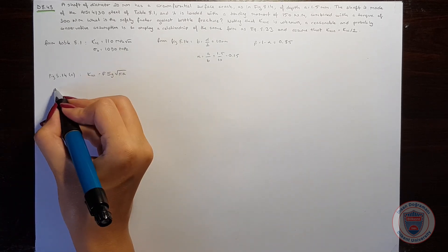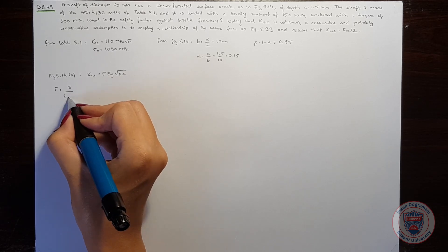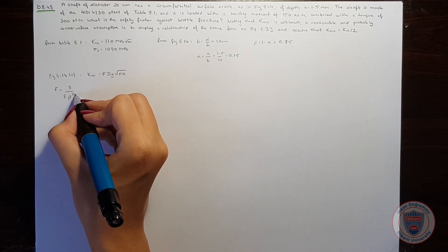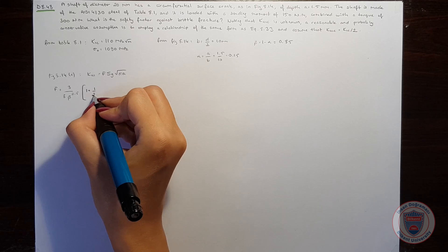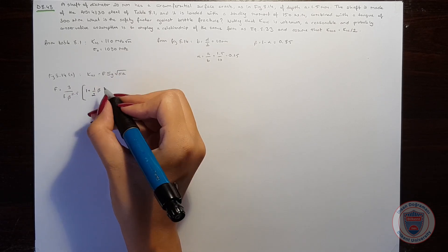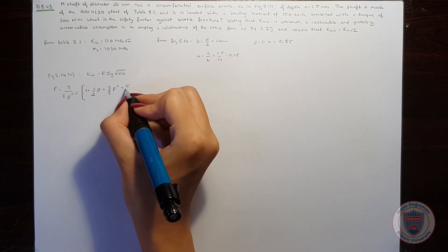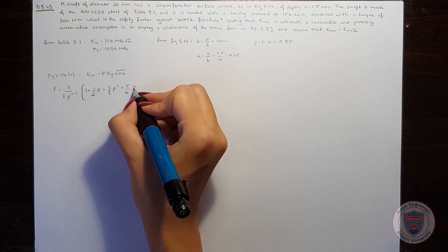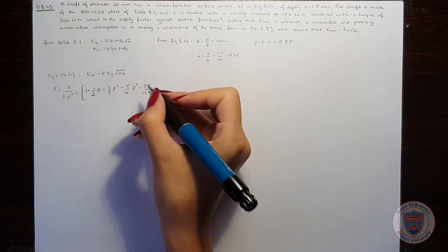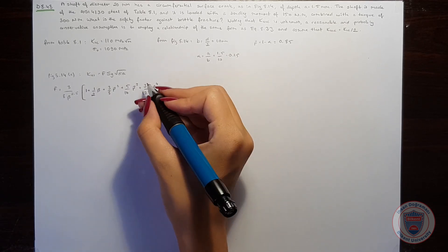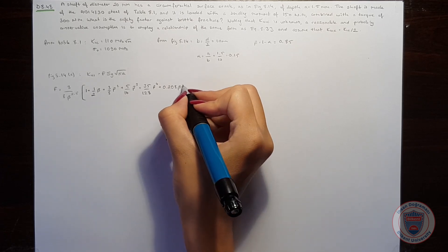For this equation, the form factor equals 3/8 times beta to the power 2.5, times the quantity (1 plus 1/(2 beta) plus 3/8 times beta squared plus 5/16 times beta to the fourth plus 35/128 times beta to the fourth plus 0.208 beta to the fifth).